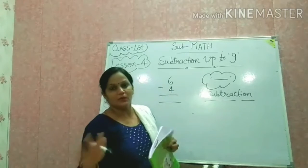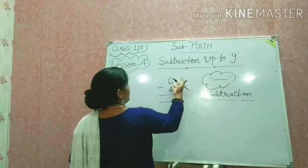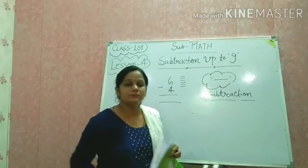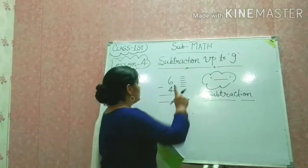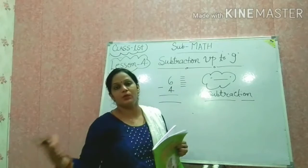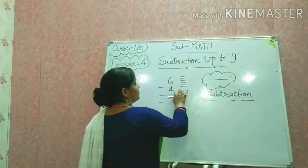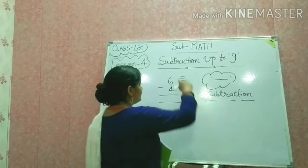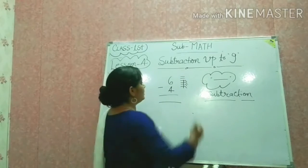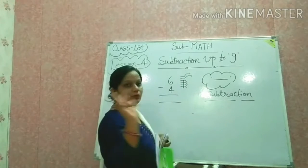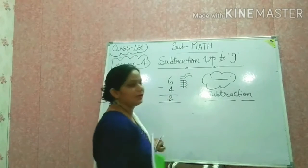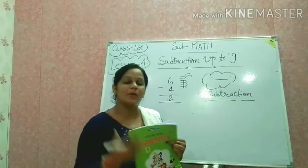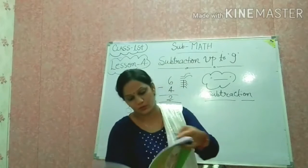Toh humara bada number kya hai? Hum 1, 2, 3, 4, 5, 6 — 6 lines draw karenge. Ab us mein se humein kitni lines cut karni hain? 4 — kyunki 6 balloon the aur 4 balloon hoot gaye, toh hum is mein se 4 lines cut karenge: 1, 2, 3, 4. 4 lines humne cut kar di. Toh ab count kariye ki hamaari remaining lines kitni hain? 1, 2 — 2 lines remain hain, toh hum yahan answer likhenge: 2. So this is our subtraction — number ko kam karna, number ko kaatna. Okay.